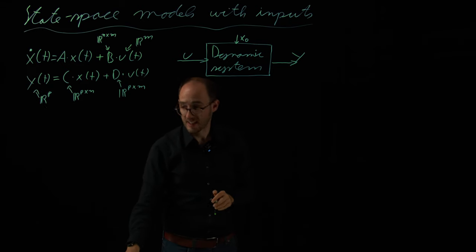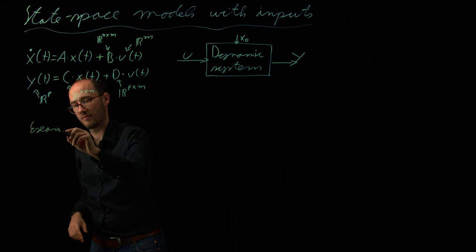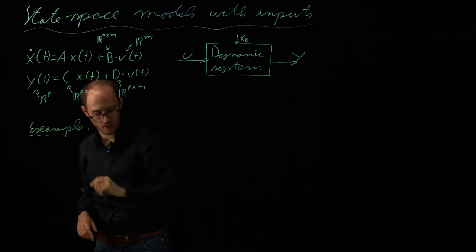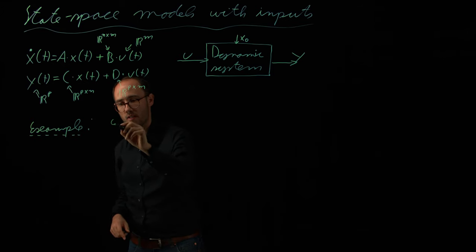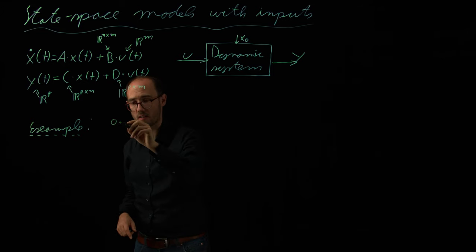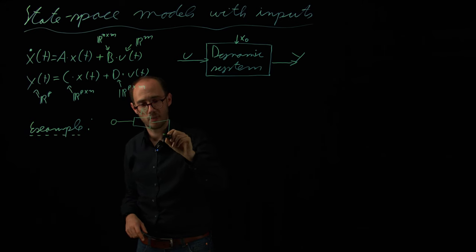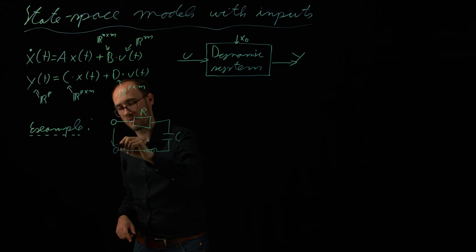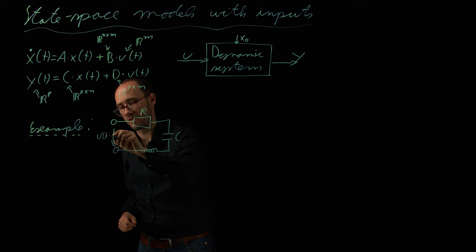What is a typical example for a linear state-space equation with an input? Let's have one from the electrical engineering domain where I come from. And for this, we can consider a very simple oscillatory circuit, a so-called RLC circuit. So, we have a resistor, R here. We have a capacitor, C. And we have an inductor, L. And as an input, we consider some external voltage device, maybe a DC source, which we consider here as u of t.